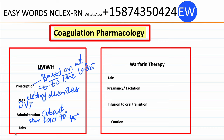Labs: if we are giving heparin infusion continuously, we should monitor aPTT values. It should be monitored daily and every six hours if there is any dosage change. The normal value for aPTT is 25 to 40 seconds.